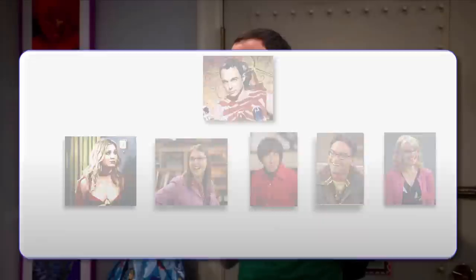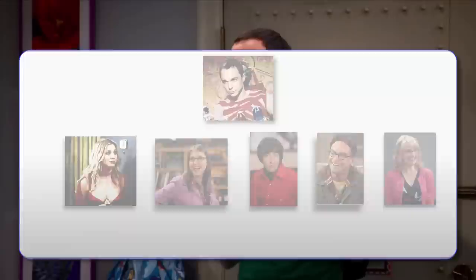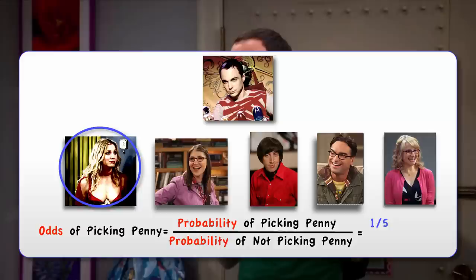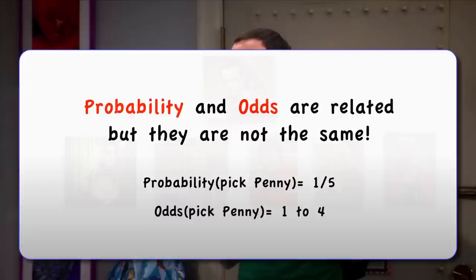Now, the odds of some event occurring are a ratio of the probability of occurrences over the probability of non-occurrences. Therefore, the odds of Sheldon ending up with Penny as a teammate is equal to the probability of ending up with Penny over the probability of not ending up with Penny, which is one over five divided by four over five. This is reported as the odds of ending up with Penny being one to four — one occurrence for every four non-occurrences. For every time that Sheldon ends up with Penny as a teammate, there will be four times that he does not. Probability and odds are very much related to one another, but they are not the same thing.